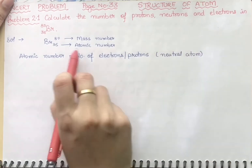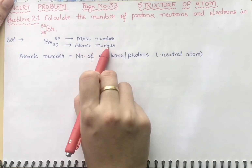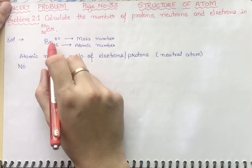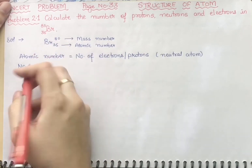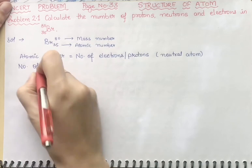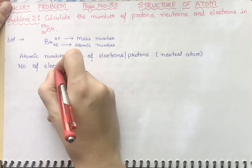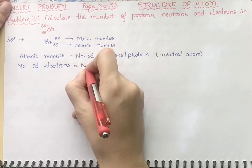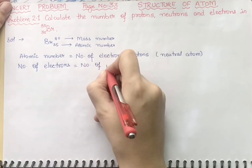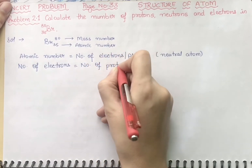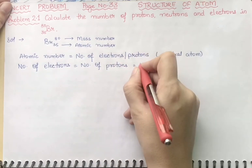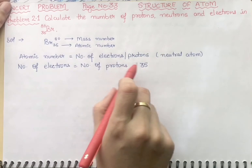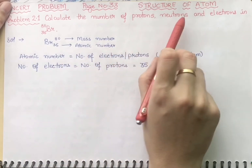Here the atomic number is 35, and since there is no charge on the bromine atom, the number of electrons equals the number of protons, which is 35.